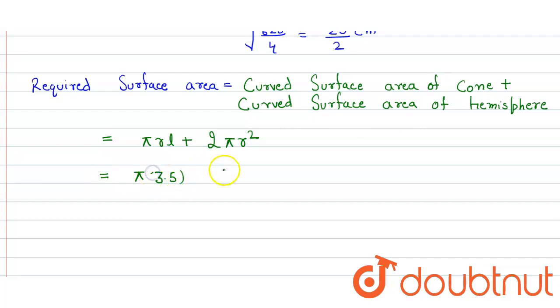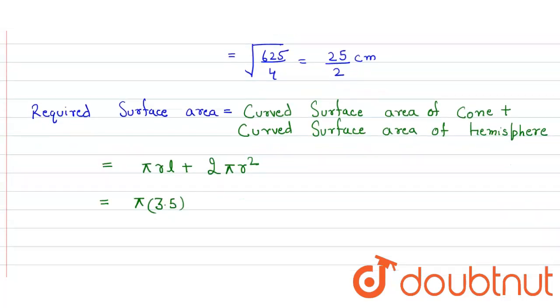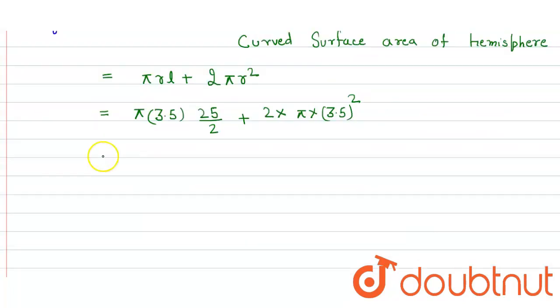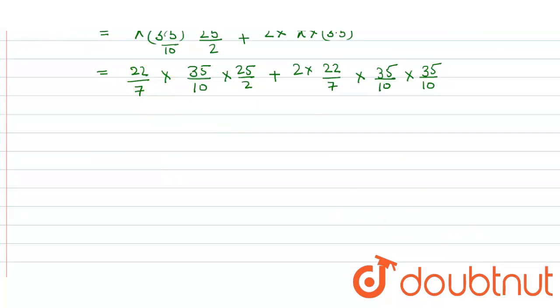Now we simply solve it. We take 22 upon 7 times 3.5, which can be written as 35 upon 10 times 25 upon 2, plus 2 times 22 upon 7 times 35 upon 10 times 35 upon 10. Now we solve it: this 7 will cancel this 35 and we get 5.